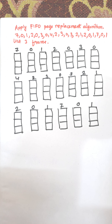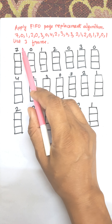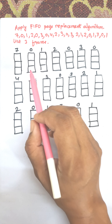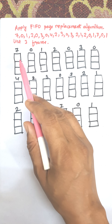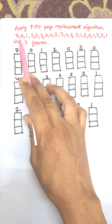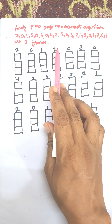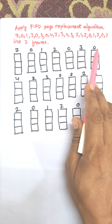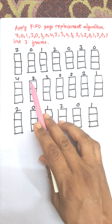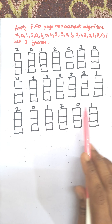In this video I am going to discuss the FIFO page replacement algorithm for the following page references: 7 0 1 2 0 3 0 4 2 3 0 3 2 1 2 0 1 7 0 1. Here we need to use three frames, so first of all we draw all three frames and the corresponding page references.